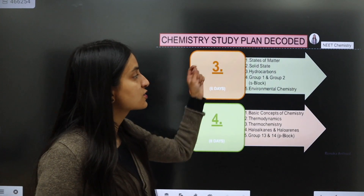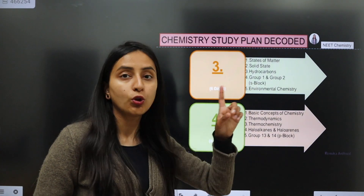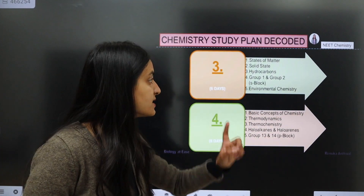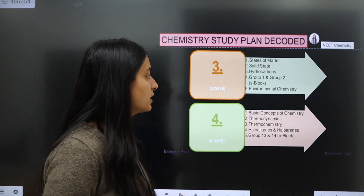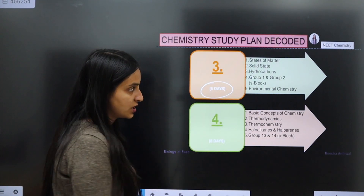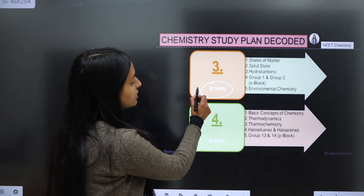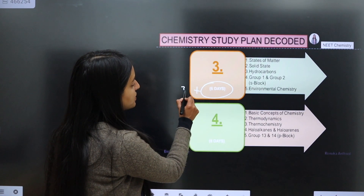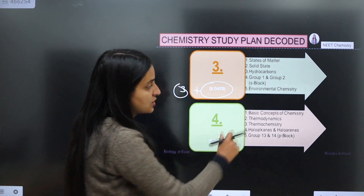Your third group covers states of matter, solid states, hydrocarbons, group 1 and 2 s-block elements, and environmental chemistry — these chapters are under 6 days. If you follow this strategy, you can take a bonus of plus 3 days, so you can complete these chapters in 9 days.